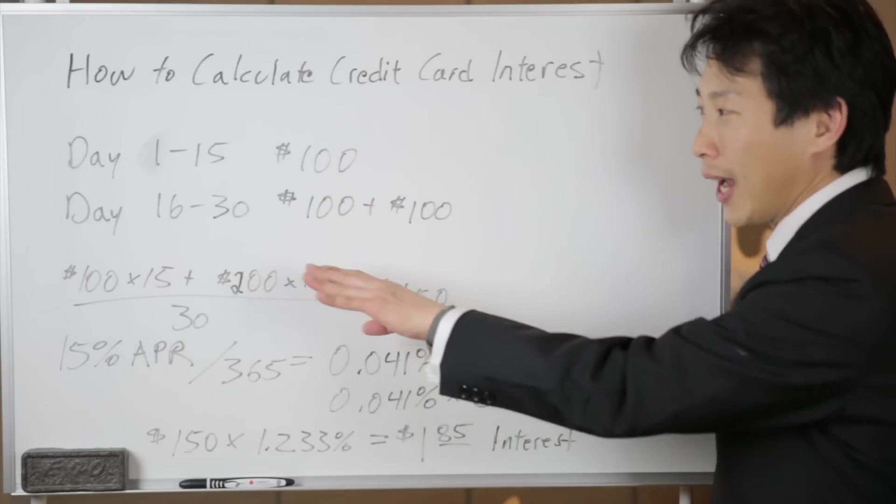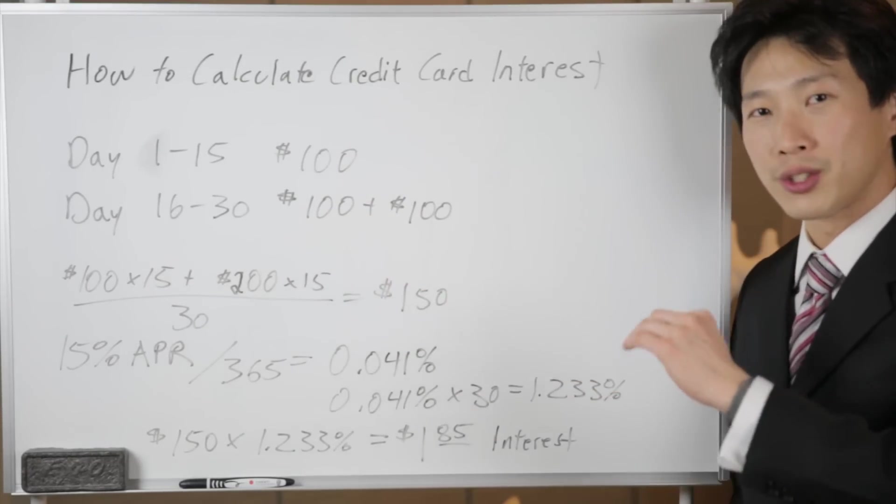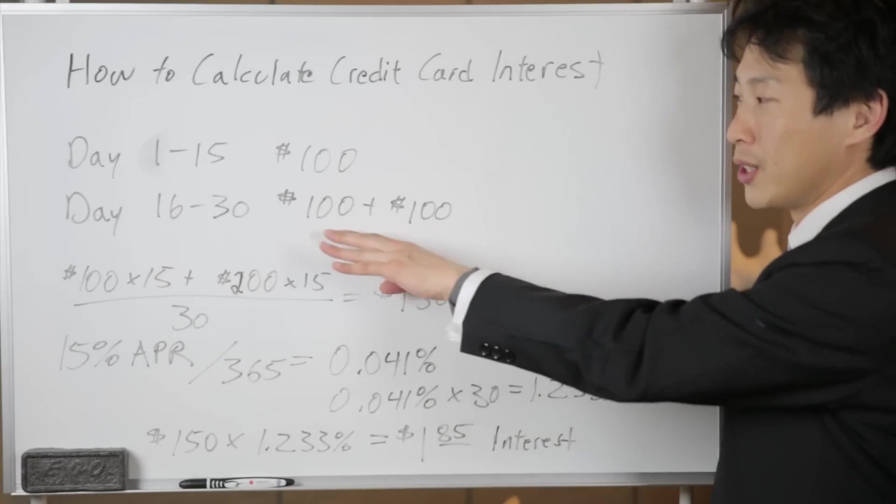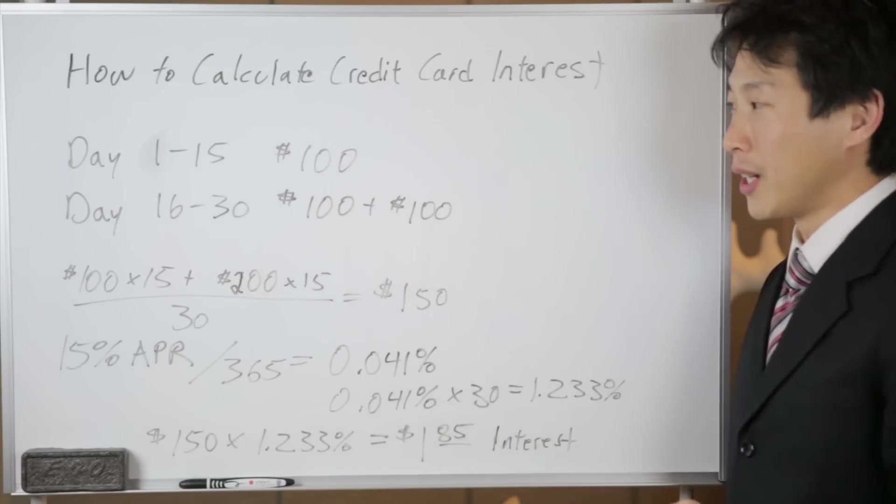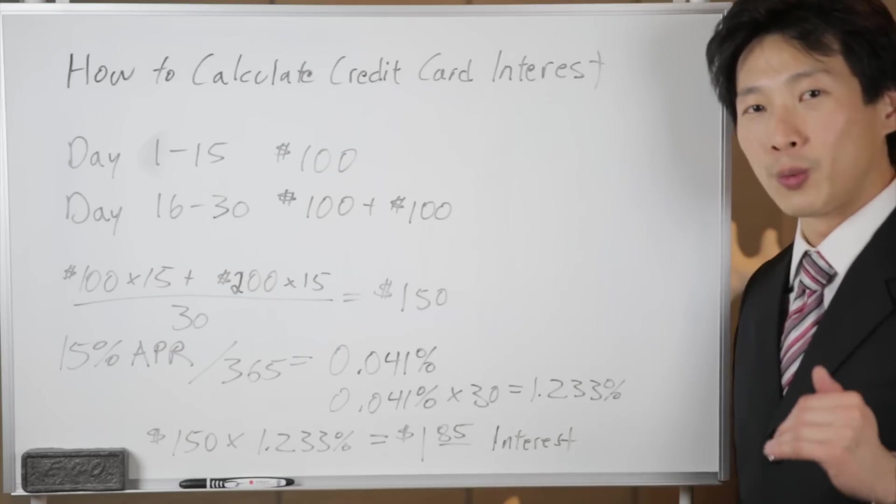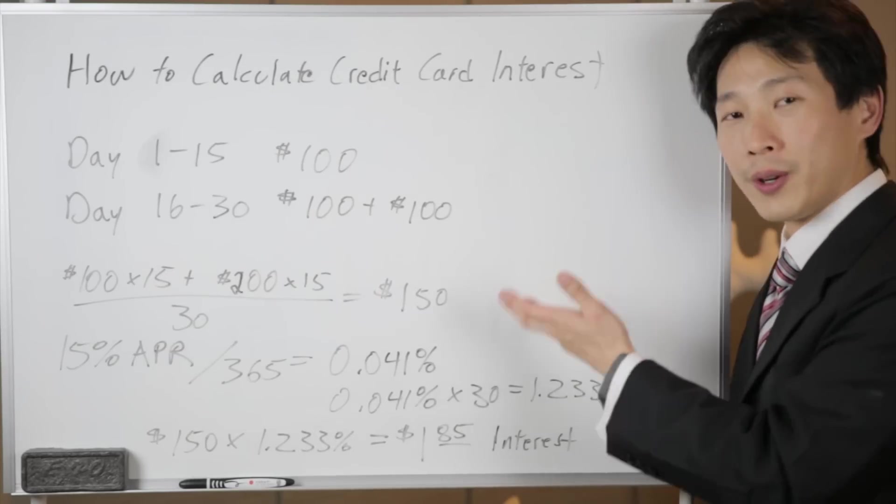So your statement balance is actually $200—$100 plus another $100—and you don't do anything for the rest of the statement period. So for this example, let's consider a month where there's only 30 days.